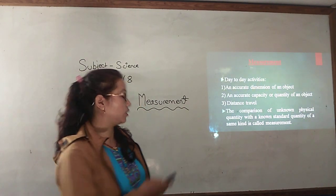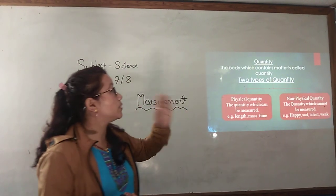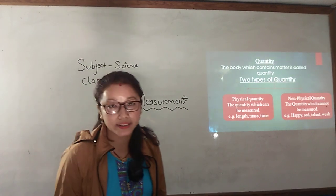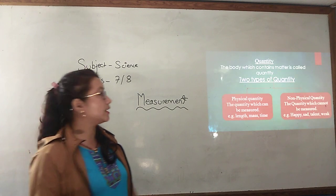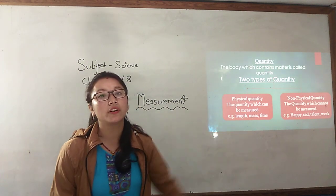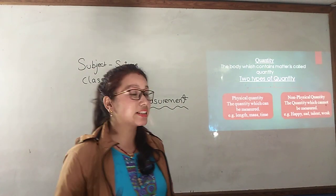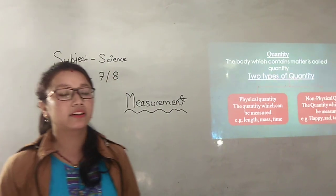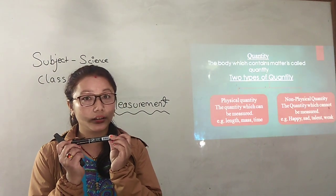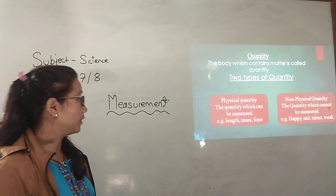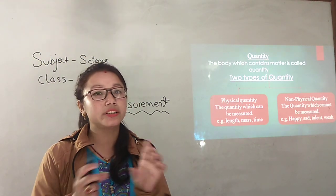Then what is physical quantity? The physical quantity, that means the quantity. The body which contains matter is called quantity. Which contains the matter, that is quantity. And there are two types of quantity: that is the physical quantity and the non-physical quantity. The physical quantity is the quantity which can be measured, such as this marker. We can measure the length of this marker. And we can measure different things such as the length, mass and time that is calculated on the clock.